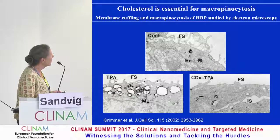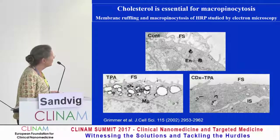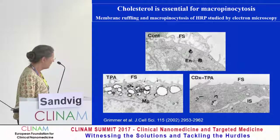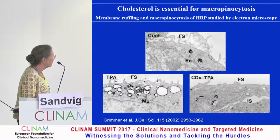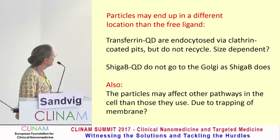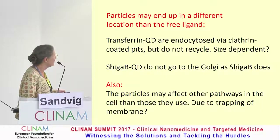Cyclodextrin can also affect macropinocytosis. This is membrane ruffling and macropinocytosis studied by the enzyme HRP, which gives black staining in this EM. Here is a control cell with small endosomes showing black staining. You can induce ruffling by adding the phorbol ester TPA, forming big vesicles. But if you extract a little cholesterol first, the cell can no longer ruffle — so you inhibit macropinocytosis as well. Also, particles may end up in a different location than the free ligand: for instance, transferrin Q-dots are endocytosed via clathrin-coated pits, but they do not recycle.